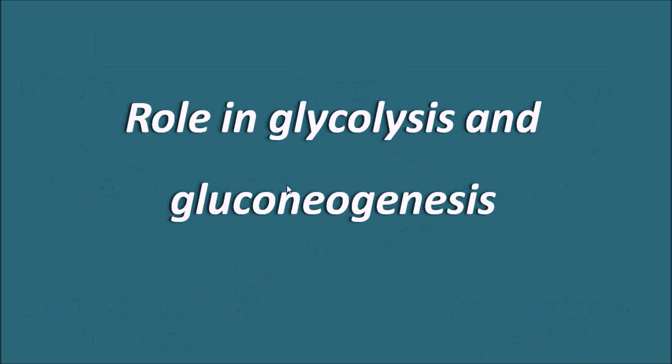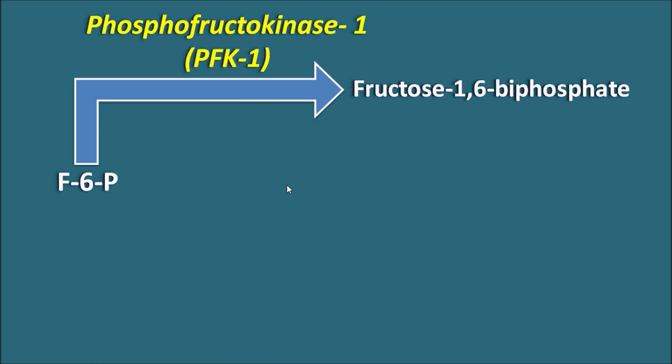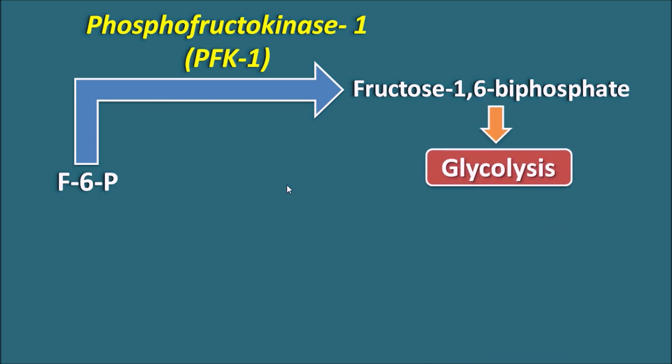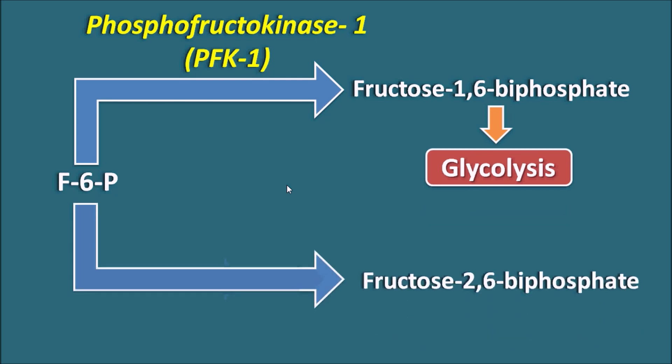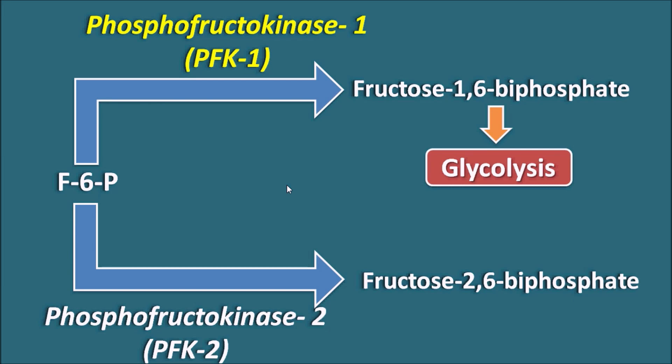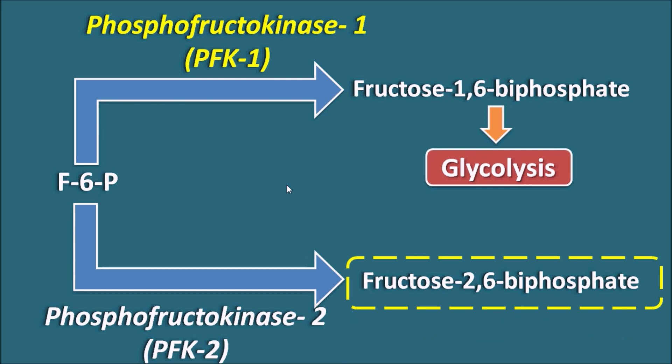Now let us see the role of cyclic AMP in glycolysis and gluconeogenesis. Fructose 6-phosphate is one of the intermediates in both glycolysis and gluconeogenesis. It can be phosphorylated by two types of enzymes. Fructose 6-phosphate can be converted into fructose 1,6-bisphosphate by the enzyme phosphofructokinase 1, commonly called PFK1. Fructose 6-phosphate can also be converted into fructose 2,6-bisphosphate by another enzyme, phosphofructokinase 2, PFK2.